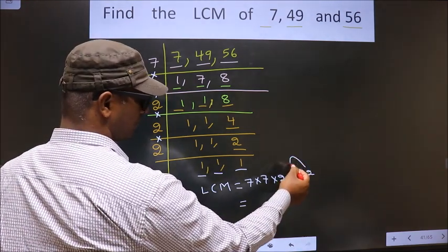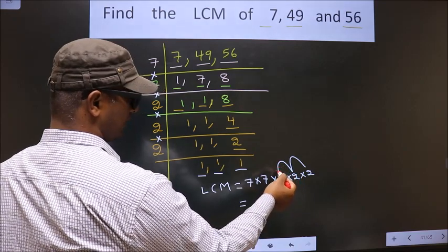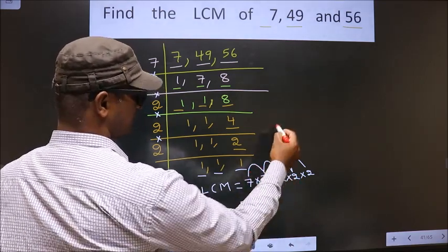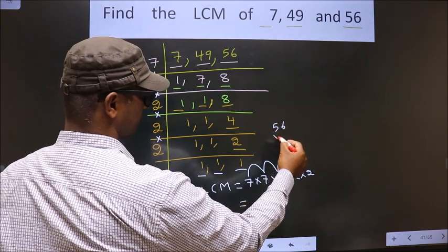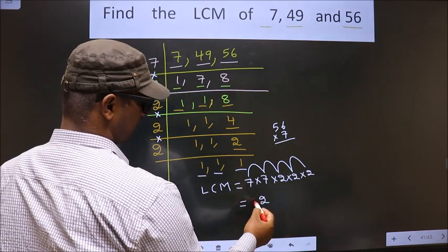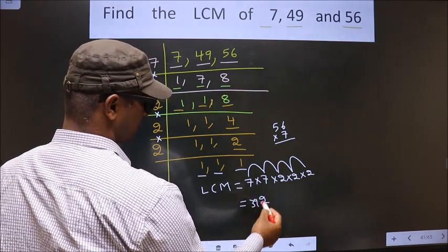2 into 2, 4. 4 into 2, 8. 8 into 7, 56. 56 into 7. 7, 6, 42. 7, 5, 35 plus 4, 39. We get 3, 92.